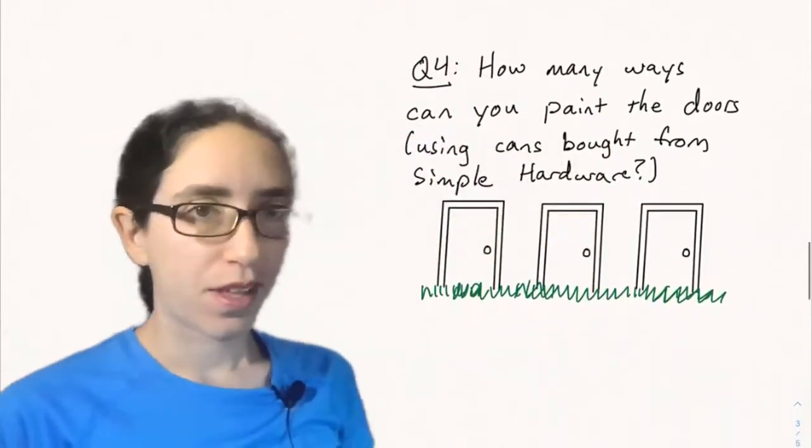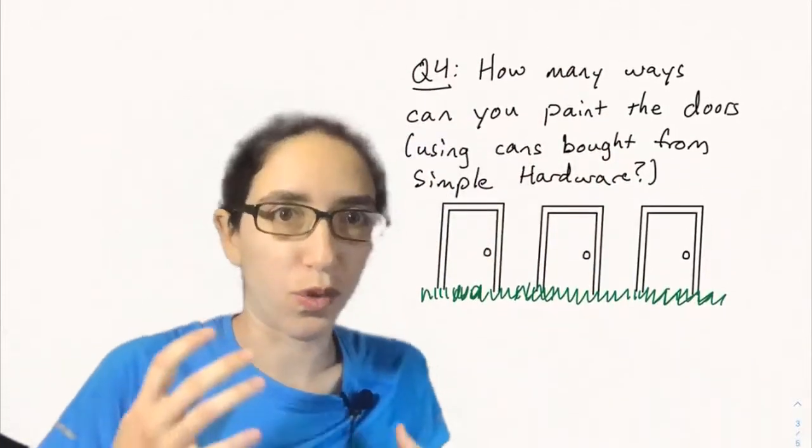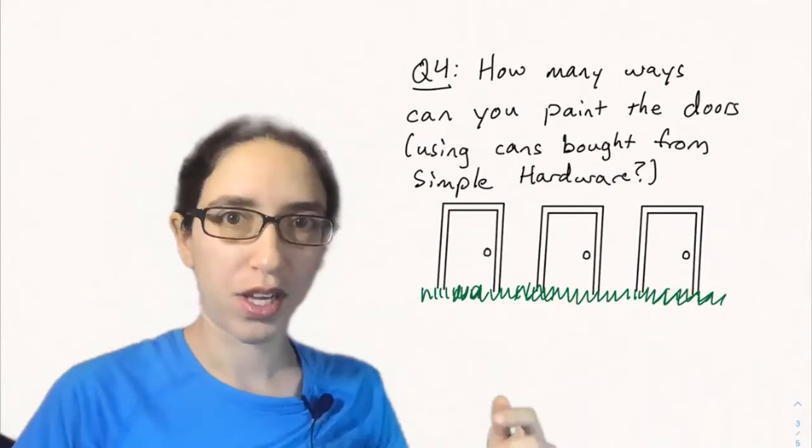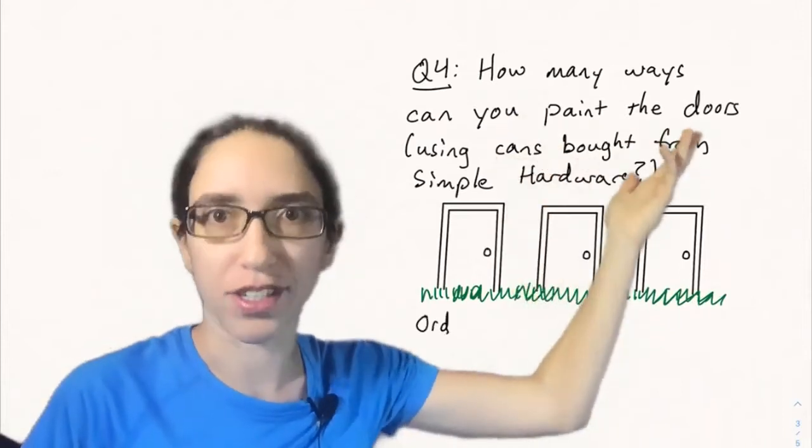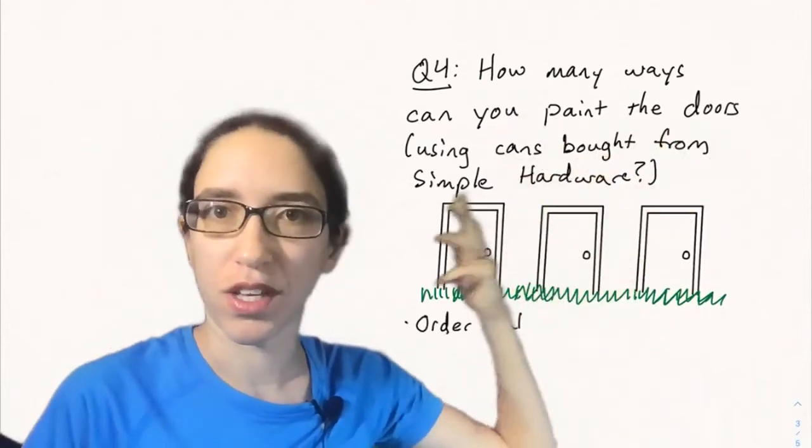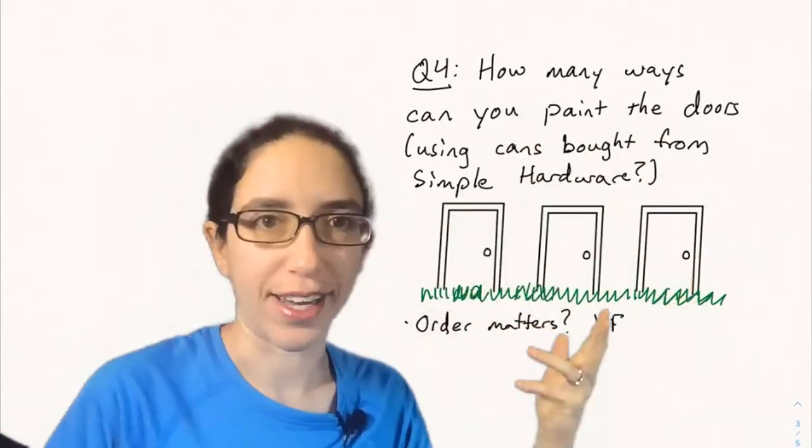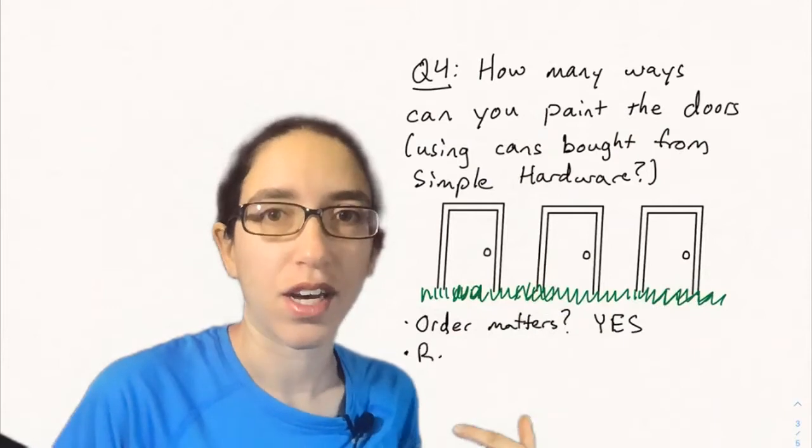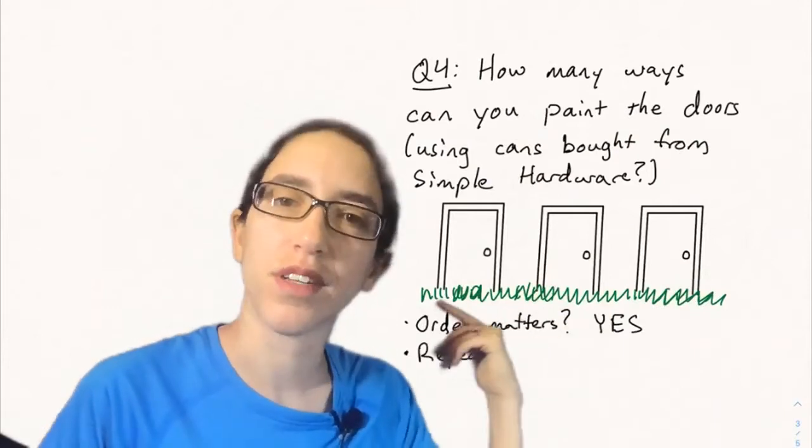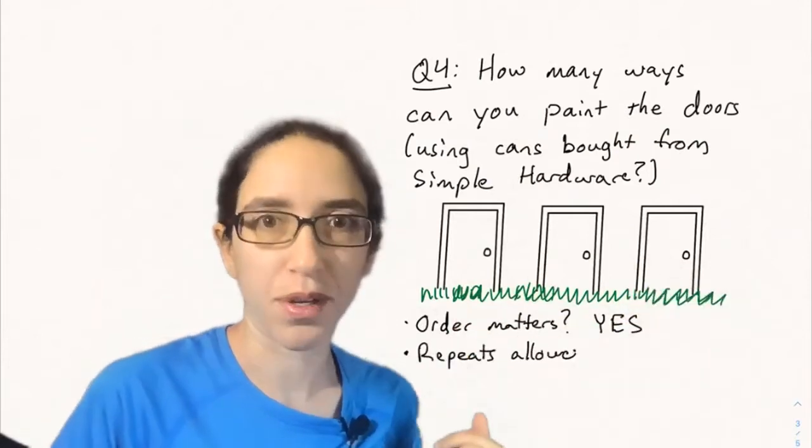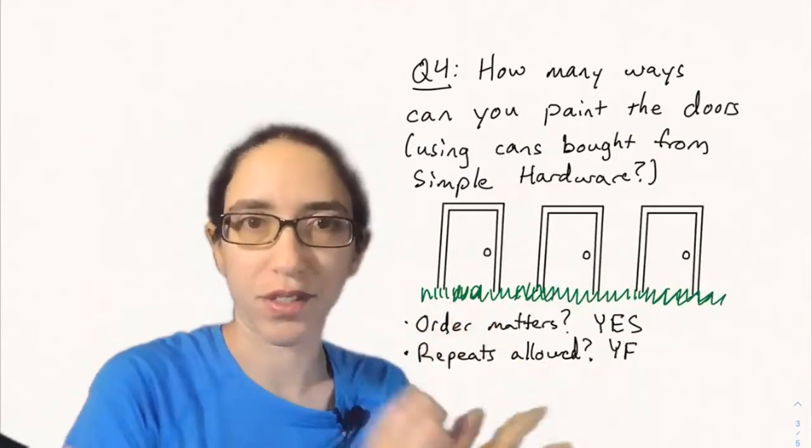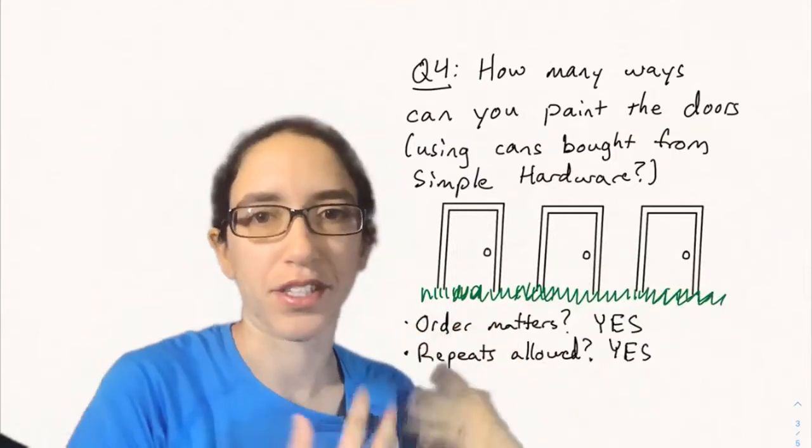And finally here's the final possibility if we want order matters and repeats are allowed. Well now the question is how many ways can you paint the doors using cans bought from simple hardware? So we have no restrictions on how many times we use a color but order still matters because the doors are still lined up. So it is a sequence of colors, order matters and repeats are allowed.